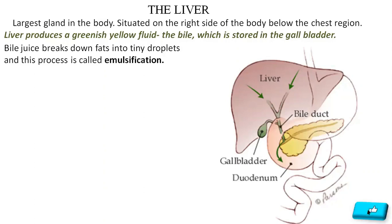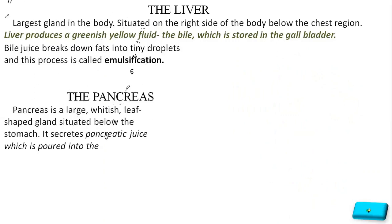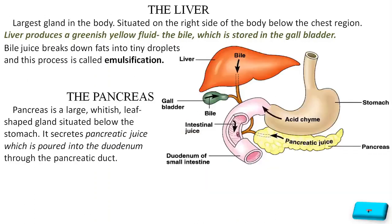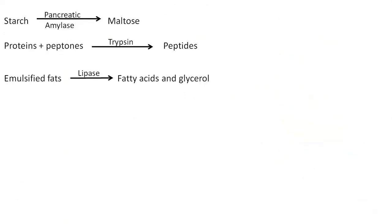The pancreas is a large, whitish, leaf-shaped gland situated below the stomach. It secretes pancreatic juice which is poured into the duodenum through the pancreatic duct, which opens into the duodenum by a passage common to that of the gallbladder. The pancreatic juice contains enzymes amylase, trypsin, and lipase, which help in the digestion of carbohydrates, proteins, and fats. Amylase acts on starch and converts it into maltose; trypsin converts proteins and peptones into peptides; and lipase acts on the emulsified fats and converts them into fatty acids and glycerol.